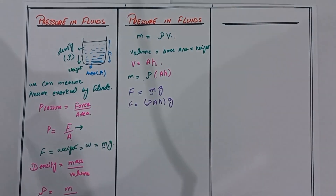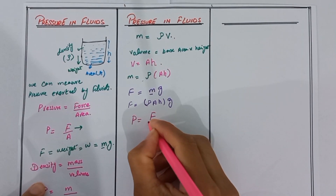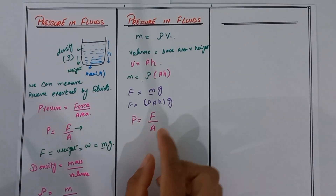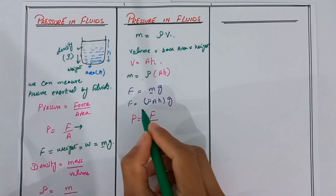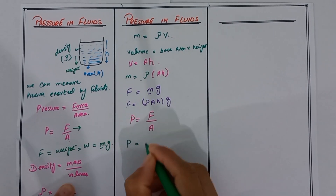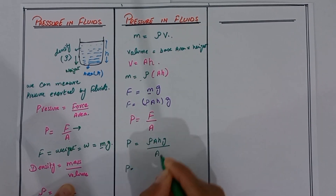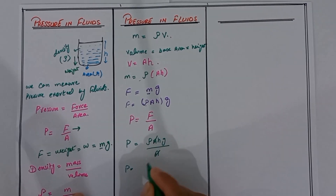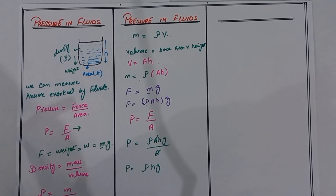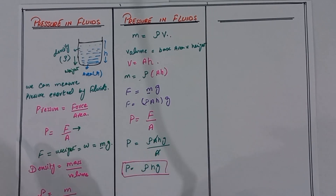Now we put this force into the pressure formula: pressure equals force divided by area. Substituting F equals rho times A times H times g, and dividing by area A, the area cancels out. So the final formula is P equals rho times g times H. We can measure the pressure of a fluid using density, height, and gravity.